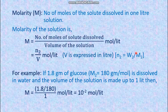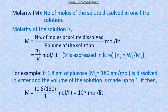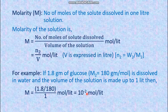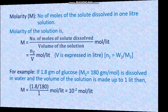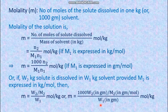N2 has a further expression: N2 = W2 / M2, where W2 is the mass of the solute and M2 is the molar mass of the solute. For example, if 1.8 grams of glucose (molar mass 180 g/mol) is dissolved in 1 liter of solution, N2 = 1.8 / 180 = 10⁻² mole, and therefore M = 10⁻² mol/L. This is the molarity of the glucose solution.